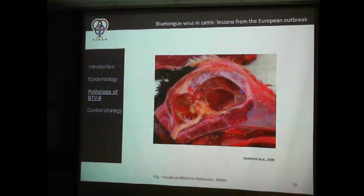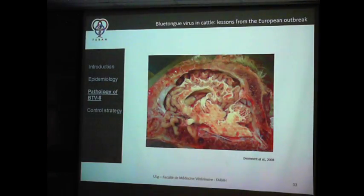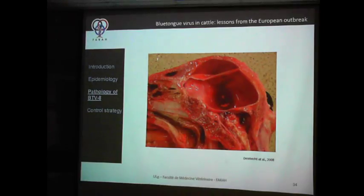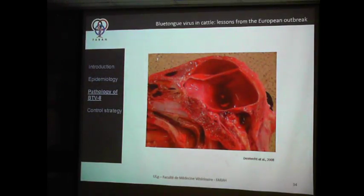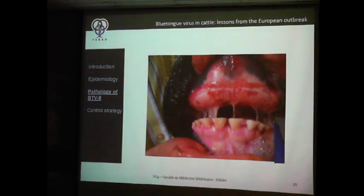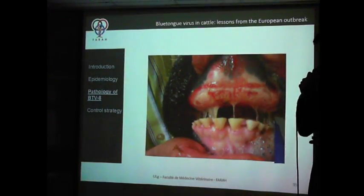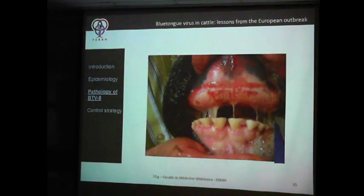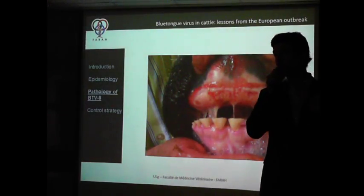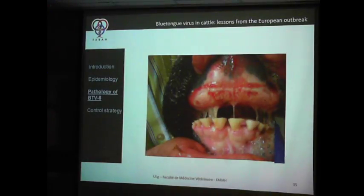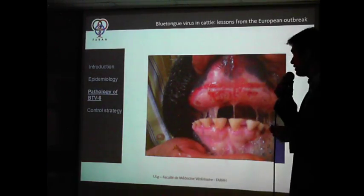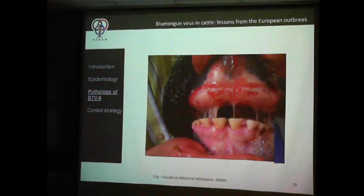Parencephaly and hydranencephaly represent failed brain development. Interestingly, in some adult cattle the only clinical signs were erosions and ulcerations in the mucosae — of course you immediately think of a large differential diagnosis including all vesicular diseases and foot-and-mouth disease. This makes it extremely important to arrive at the right diagnosis. When you see this kind of lesion, you're not happy.